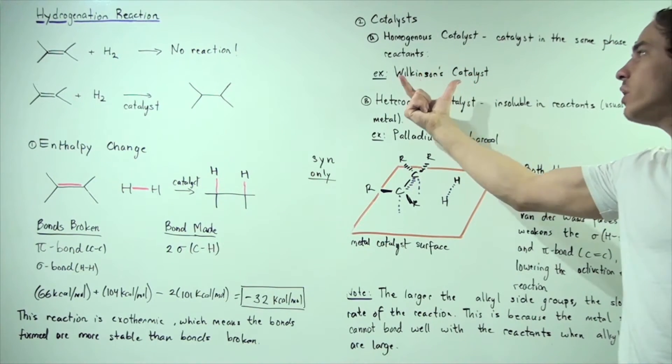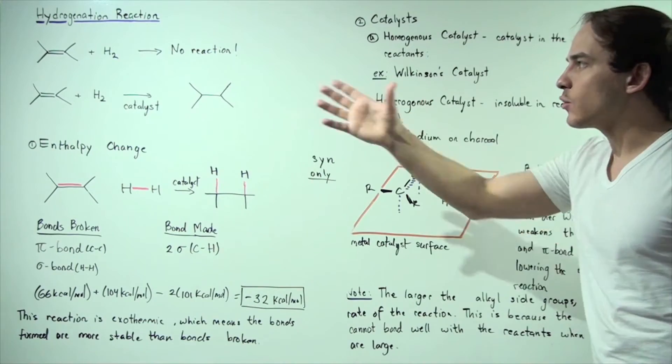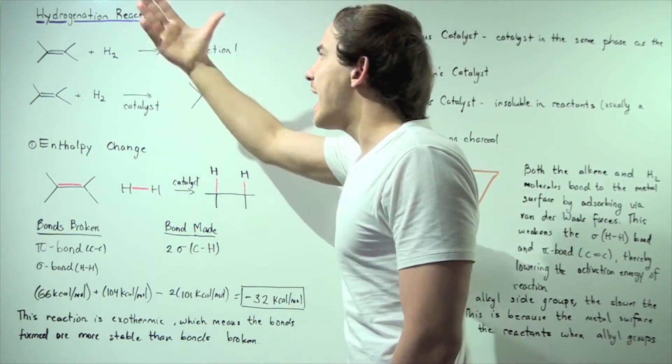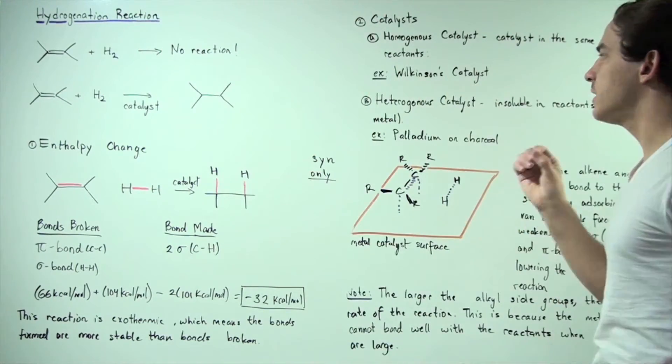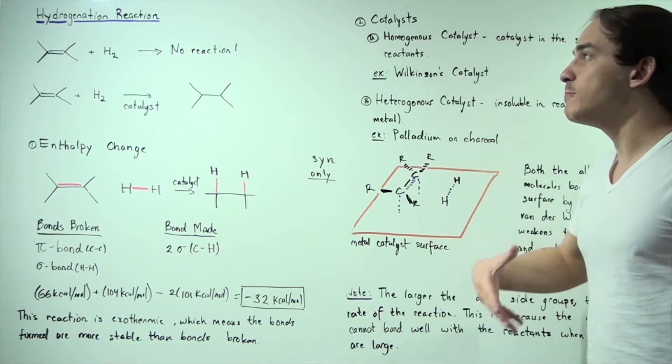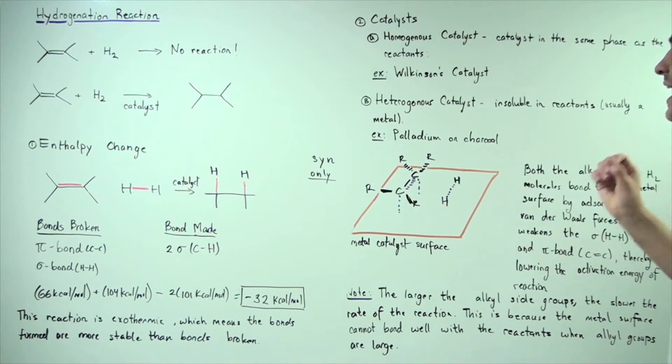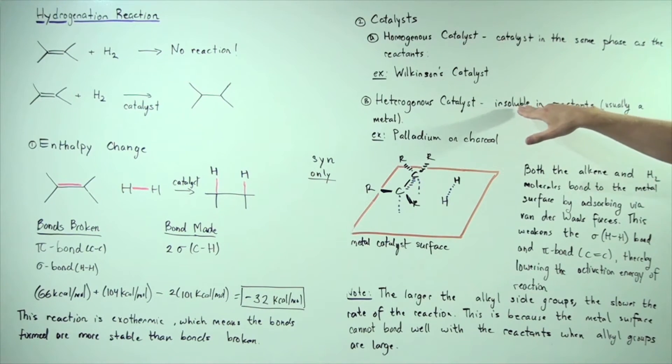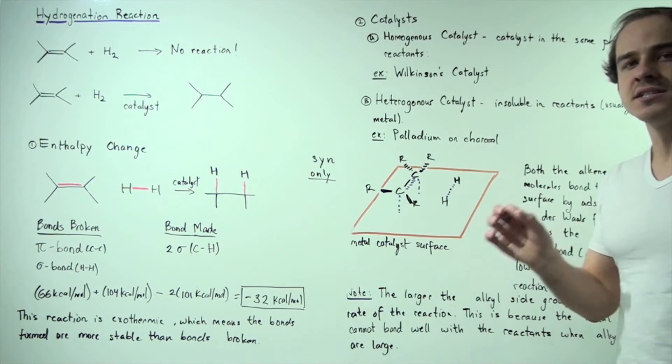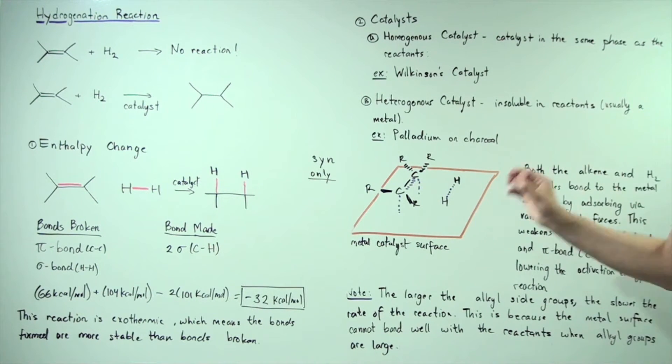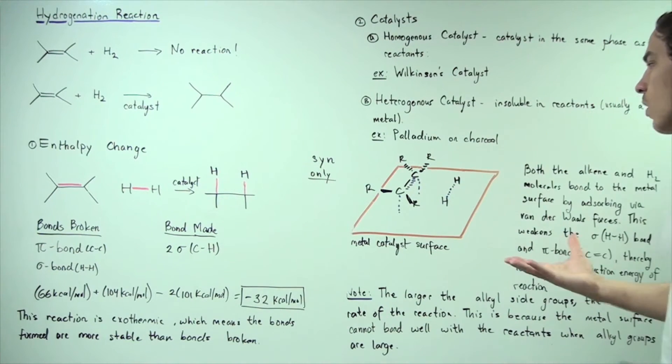So if we take the Wilkinson's catalyst and add it to our reactants, the following hydrogenation reaction will take place. A second type and more common catalyst is a heterogeneous catalyst. This is an insoluble catalyst. It's insoluble in our reactants and it's usually a metal. One such example of a heterogeneous catalyst is palladium on charcoal.